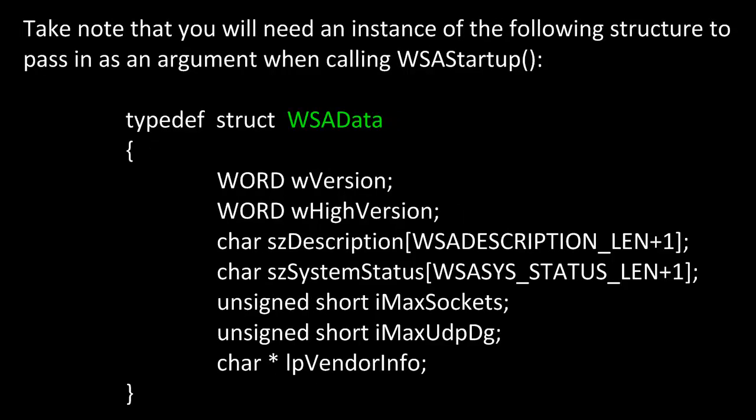Take note that you will need an instance of the WSADATA structure to pass in as an argument when calling WSAStartup. It is a typedef of a structure, WSADATA, and the data members are two WORD objects, two character arrays, two unsigned short integers, and a pointer to a character. wVersion and wHighVersion hold version information, szDescription holds description information, and iMaxSockets and iMaxUdpDg would also configure those attributes.